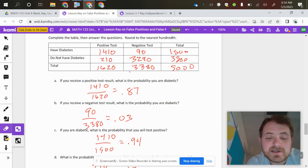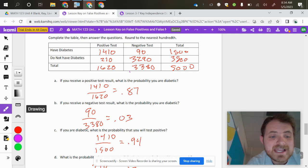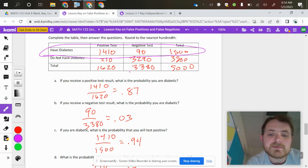If you're diabetic, what's the probability that you will test positive? So if diabetic, that's this row here, what's the probability that you will test positive? This sometimes it ends up being like, oh, I could have just went back to the question. Yes, you can, but still trust the table. So 1,410 divided by the 1,500 total of people with diabetes is 94%, which is consistent with what was stated in the question.